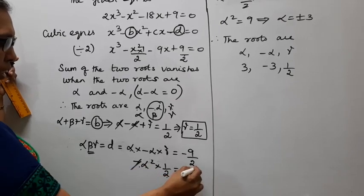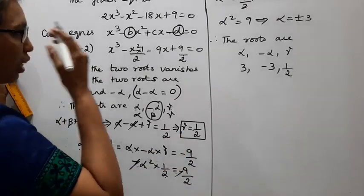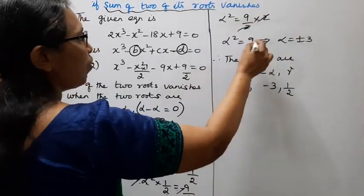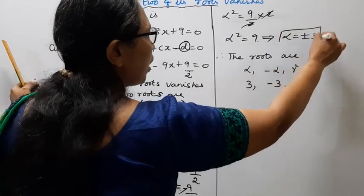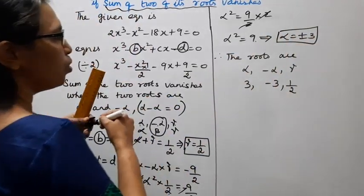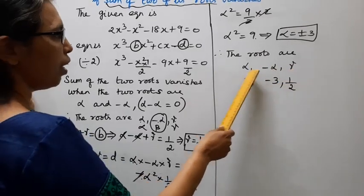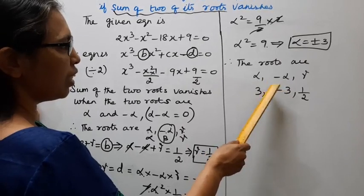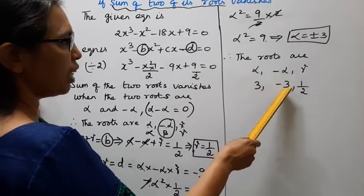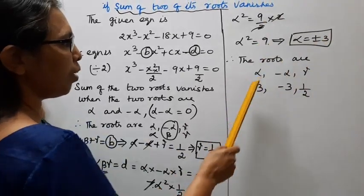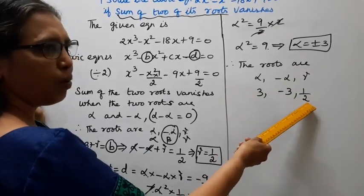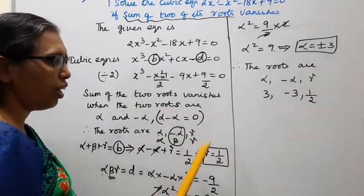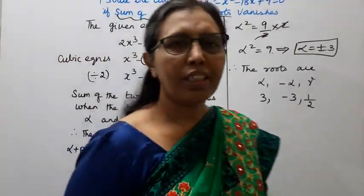Simplifying, minus alpha² divided by 2 equals minus 9/2, so alpha² equals 9, giving alpha equal to plus or minus 3. Therefore the three roots are 3, minus 3, and 1/2.